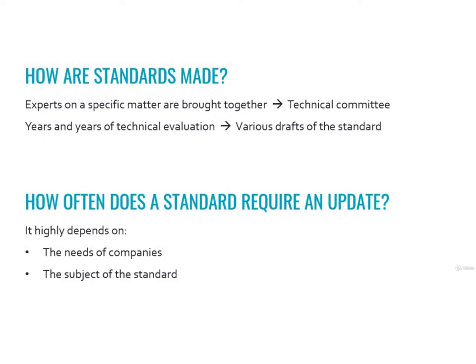Until 2018, no ISO standard on occupational health and safety even existed. The only standard on that matter was BS OHSAS 18001, made in 2007 — not even an ISO standard, but a British standard that became internationally recognized because there was a huge void to fill. Once a new edition of a standard is made, companies have a few years to adapt. Being certified according to a standard allows you to stay updated, so if your company is ISO 45001 certified, it changes as the OHS world changes.